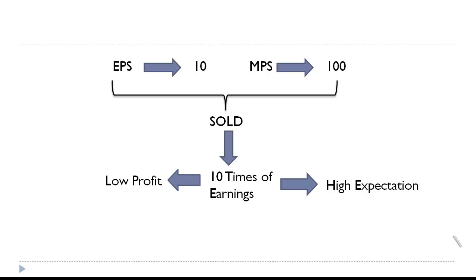The price-earnings ratio is market price divided by earnings. If the earnings are very low, if the denominator is very low, obviously the ratio will be very high. A high ratio can also be on account of low profit, which will be on account of low EPS.